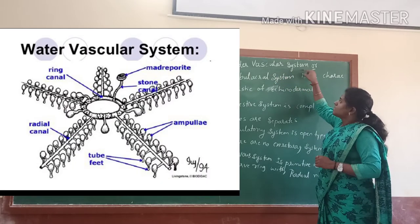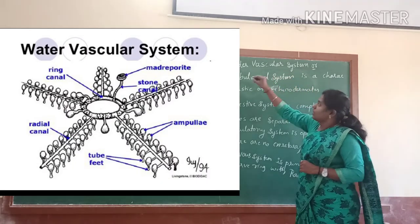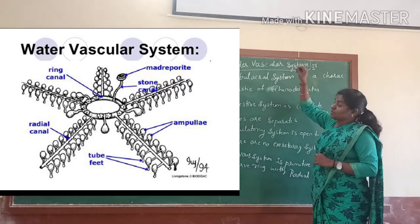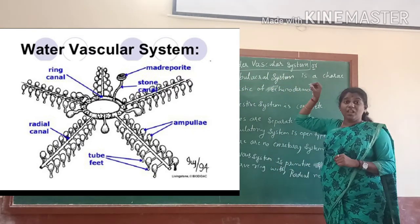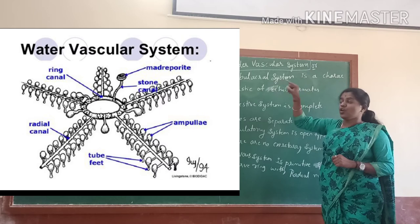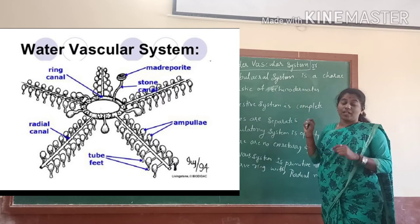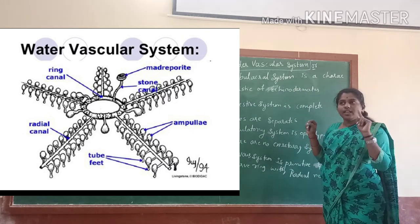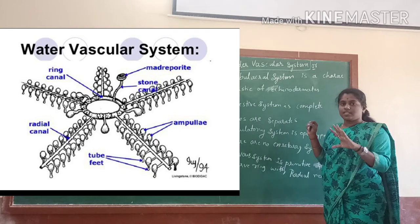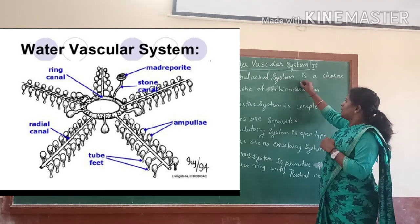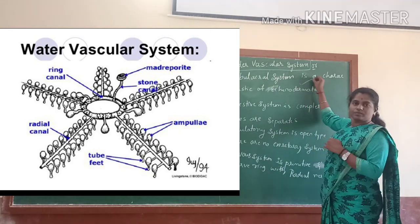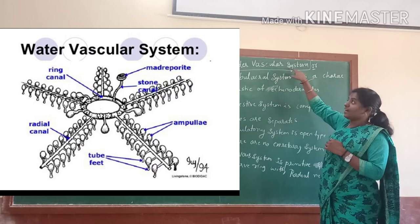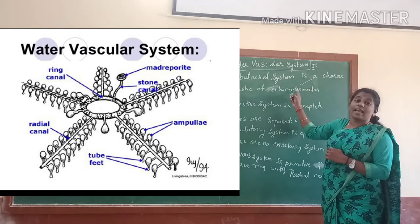Water vascular system — water vascular system is a main peculiar characteristic of Echinoderms. Water vascular system is the most important character of Echinoderms.